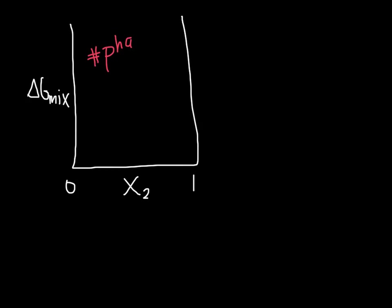The number of phases determines the number of curves. In some cases a phase has a particularly high — that is, positive — delta G mix, and it is not part of the interesting story. The system will adopt whichever phase has the lowest delta G mix, and it is possible that this could be a two-phase region where two different phases are in equilibrium, with compositions given by the common tangent construction.